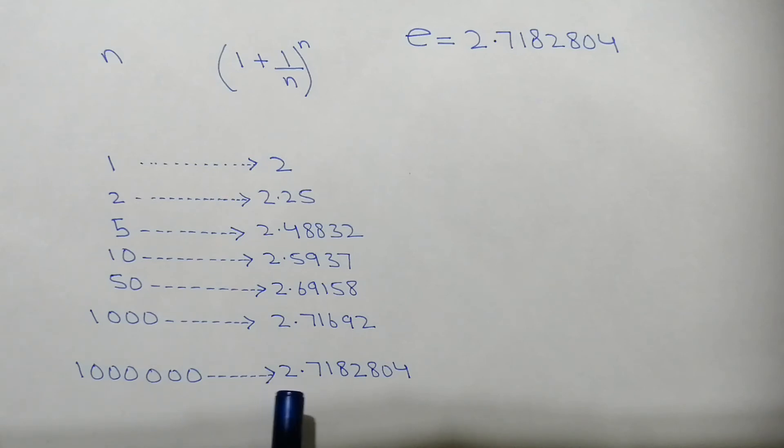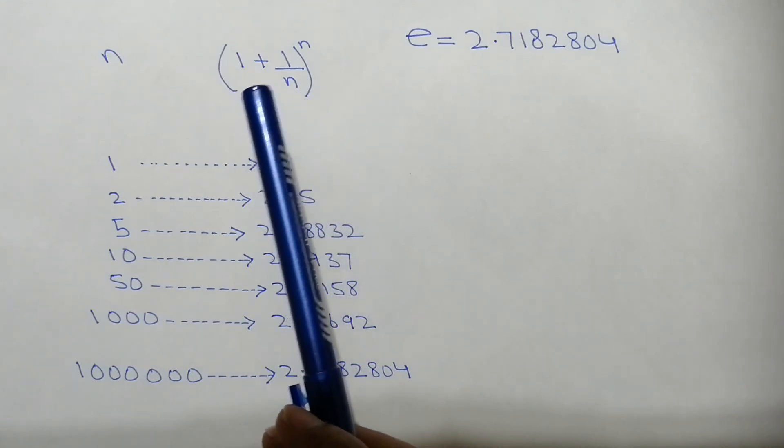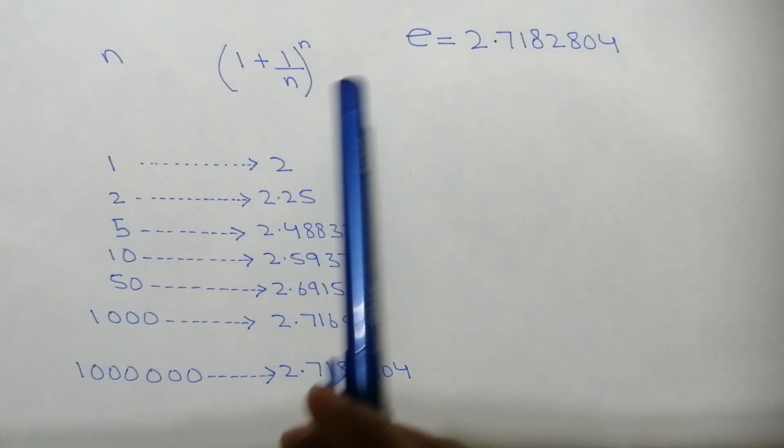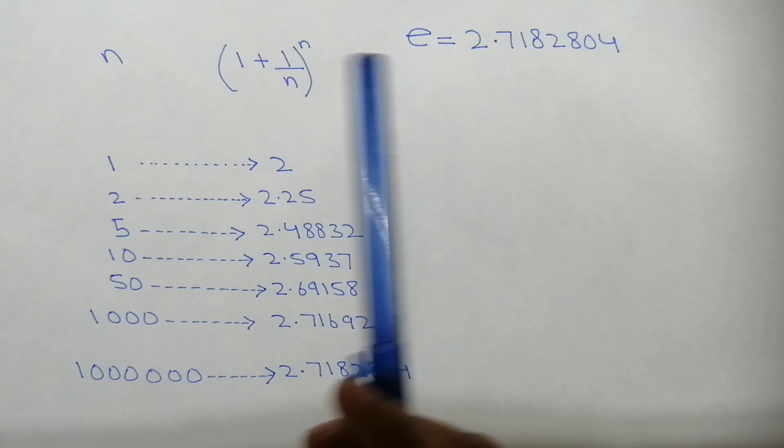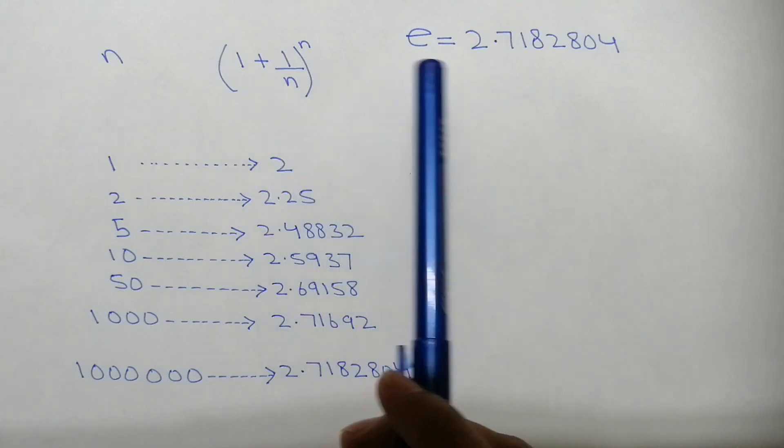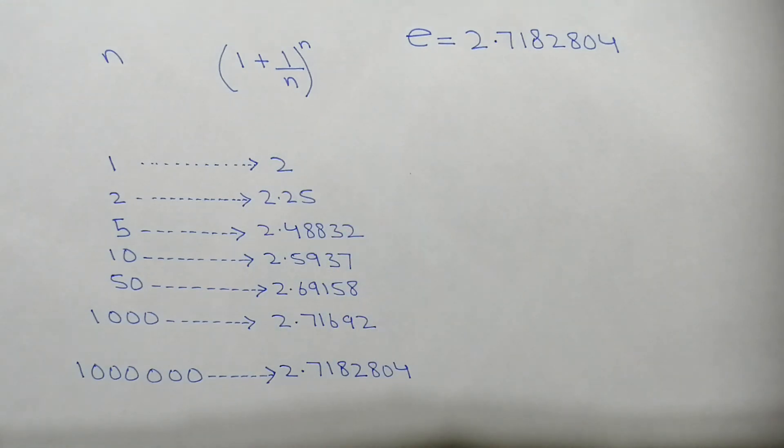And this is the value of e. So the value of e comes when we put n = 1 million in this formula, then this is exactly equal to e. I hope you understand. Thank you for watching this video.